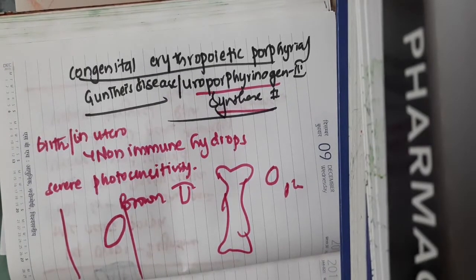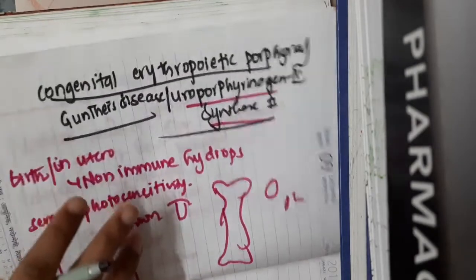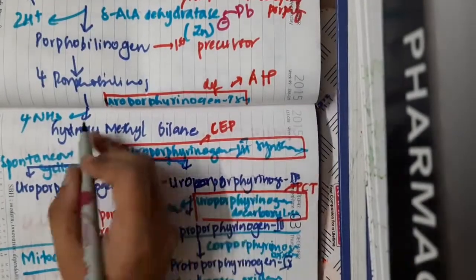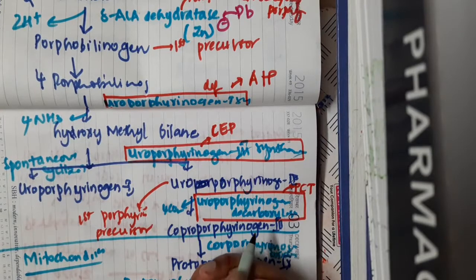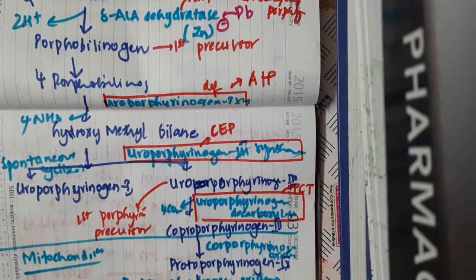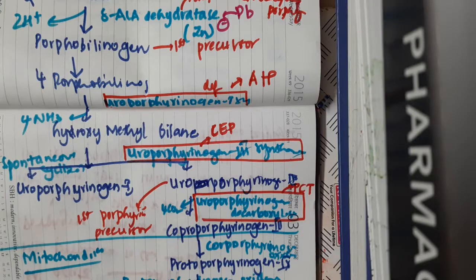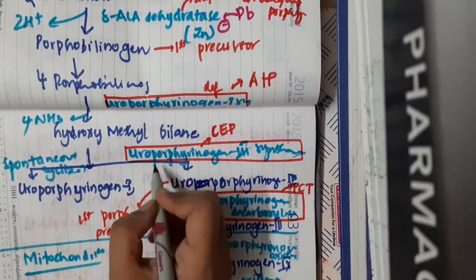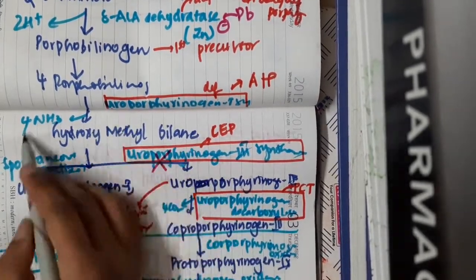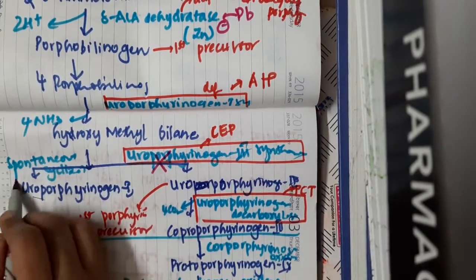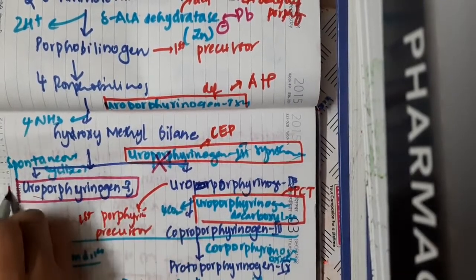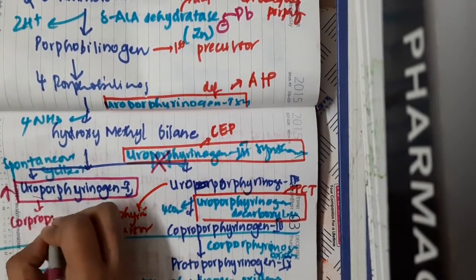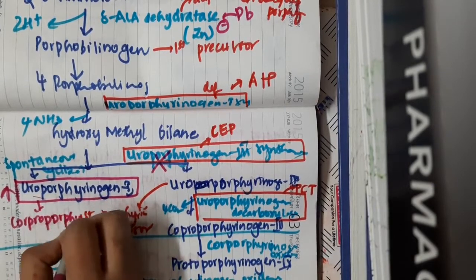Coproporphyrin becomes prominent in the feces. Because of the defect in uroporphyrinogen-3 synthase, the normal pathway will not occur. So this hydroxymethylbilane spontaneously undergoes cyclization and forms uroporphyrinogen-1, which increases. This uroporphyrinogen-1 then converts into coproporphyrinogen-1.